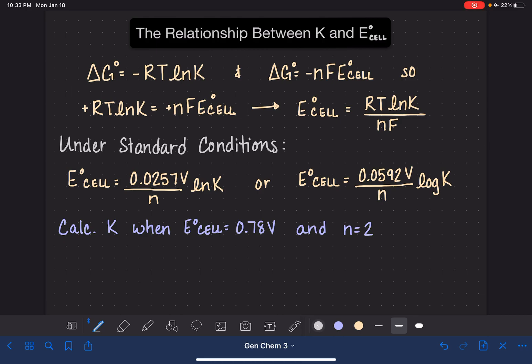This is pretty simple to use just in terms of getting everything plugged into this equation. I like to use the log base 10 equation, so that's going to be the one that I use. I'm going to plug in my value of E cell first. It is 0.78 volts, and that is equal to my constants.